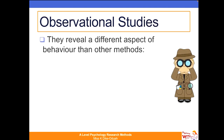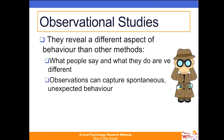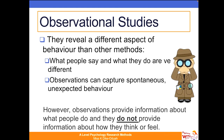Observational studies are able to reveal different aspects of behaviour than other methods, because what people say they will do is very different from what people actually do. For example, in Hofland's nurses study, nurses were called on the phone by a doctor who asked them to administer a lethal dose of an unknown drug to patients. Despite nurses saying they would never do it, 21 out of 22 were ready to administer the drug. That observational study showed that what people say about obedience is very different from what they do in those actual situations.